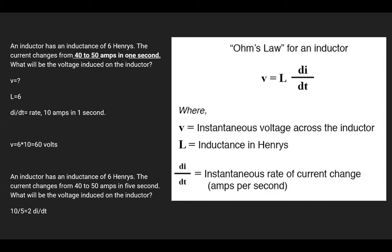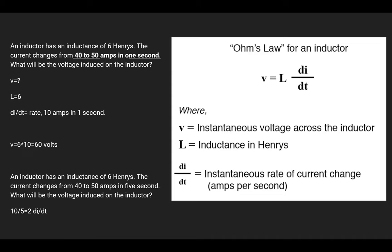Example: You have an inductor with an inductance of 6 henries, and current changes from 40 to 50 amps in one second. What is the voltage induced on the inductor? L is 6, and di/dt is the rate of current change. We went from 40 to 50 amps — that's 10 amps in one second, so the rate is 10 amps per second. So: 6 times 10 equals 60 volts.